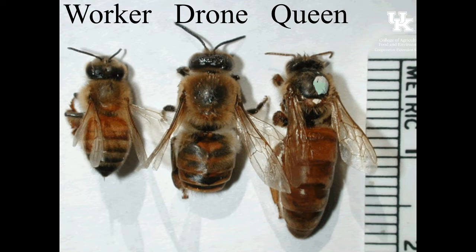The worker bees literally do all the work. They scout, they forage for food, they take care of the queen — cleaning her, feeding her. They take care of the larvae and pupae, gathering honey and storing it, making the wax comb for their homes, for nectar to be stored, for the brood to be stored. They literally do all the work. And because they work 24 hours a day, seven days a week in the summertime, they will only live about four to six weeks after hatching. They literally work themselves to death.